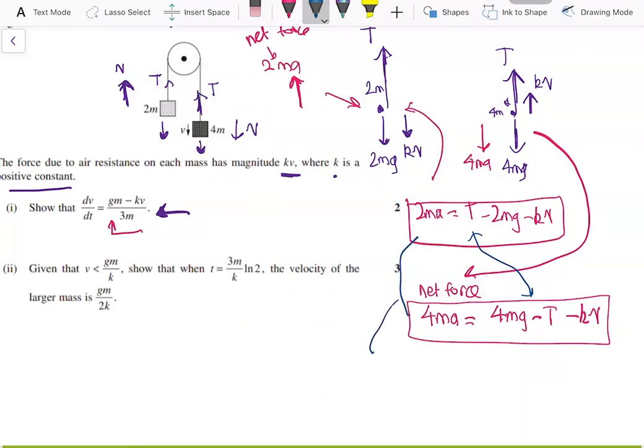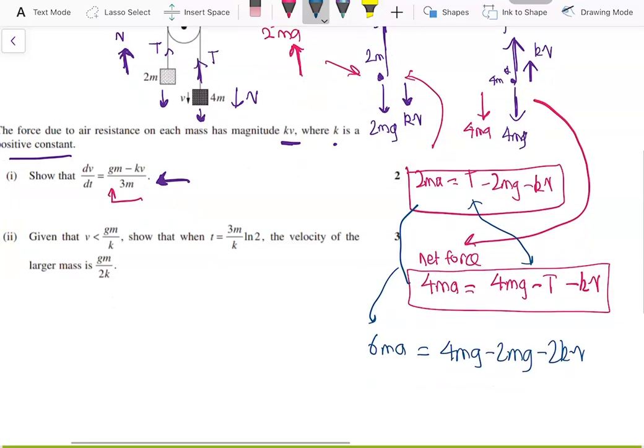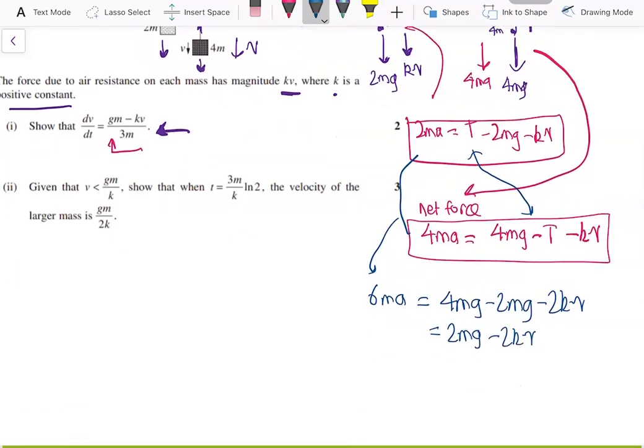The left hand side will be 6ma. The right hand side is 4mg minus 2mg minus 2kv. And now we can write this as 2mg minus 2kv. Divide both sides by 2 to get 3ma equals mg minus kv.